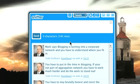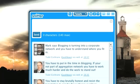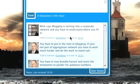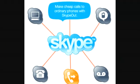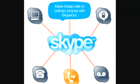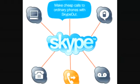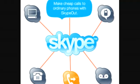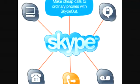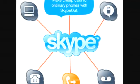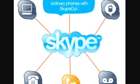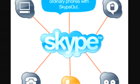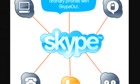This is Buona from buona.tv saying happy twittering — give Snitter a try. Buona.tv is sponsored by Skype: with Skype you can make calls to ordinary phones using Skype Out for cheap rates. Use the link in the show notes to purchase Skype Out products.